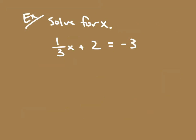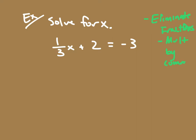So on something like this, if we're trying to solve for x — this tells me that if I take one-third, multiply it by some number x, add two, we'll get negative three — what's the value for x? The trick is to look at your denominator, because what we can do is eliminate the fractions. If we eliminate the fractions, we multiply everything by the common denominator.